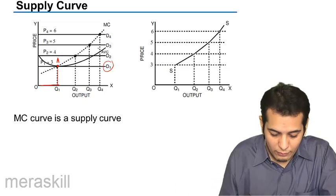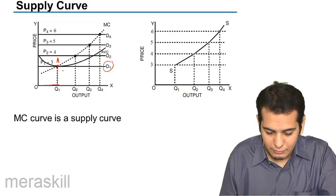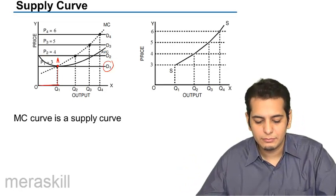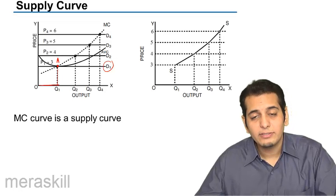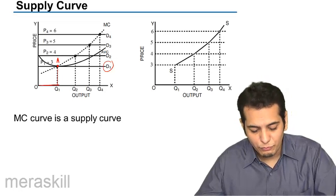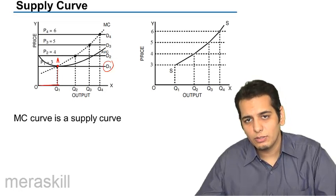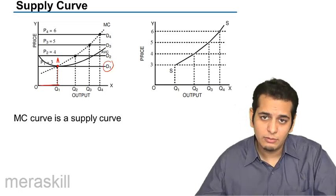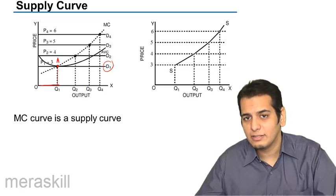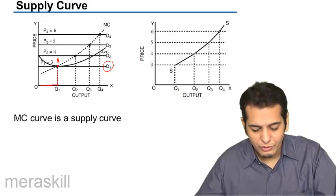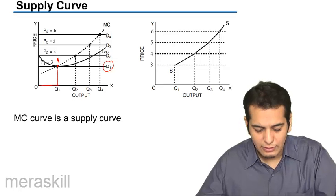Now let's say the price rises in the market from 3 to 4. Since the price is equal to demand, we can say the demand has also risen in the market. Now what is the quantity of goods that it should sell?